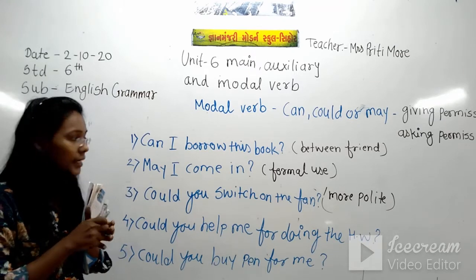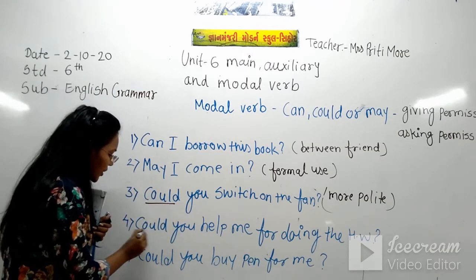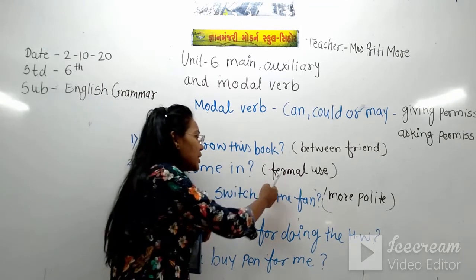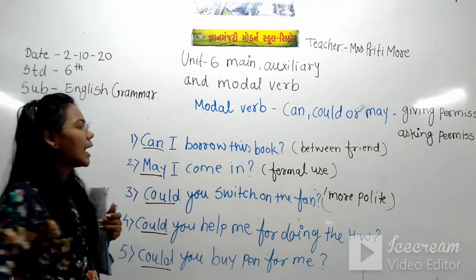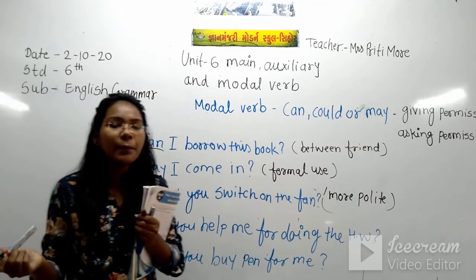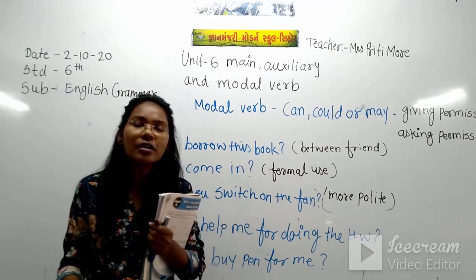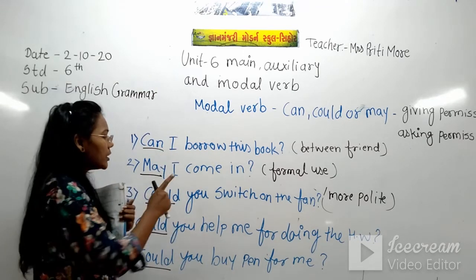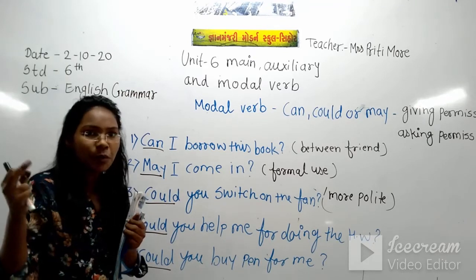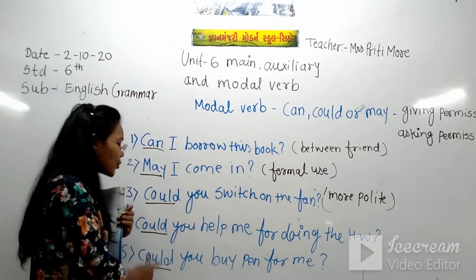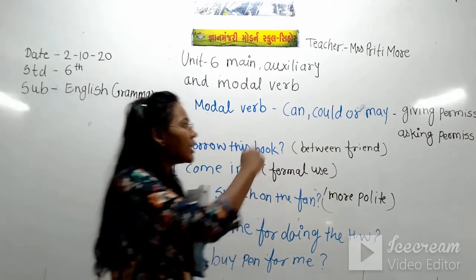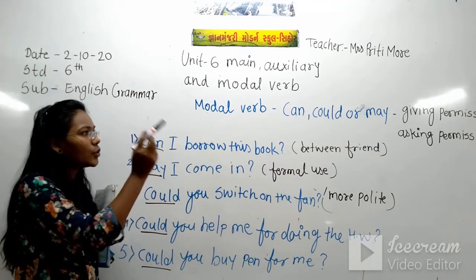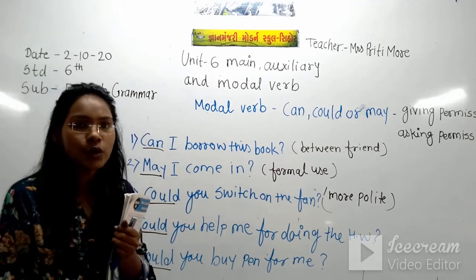So to summarize: for polite requests we use could; when we need to be formal, we use may; and when taking permission among friends or family, we use can. For giving and asking permission, we use can, could, or may. Note down these examples in your notebook.